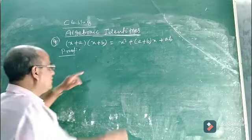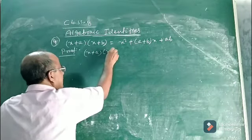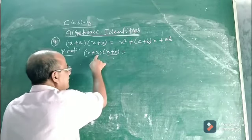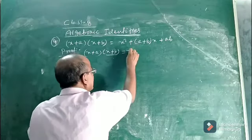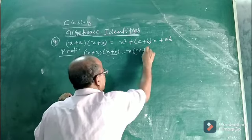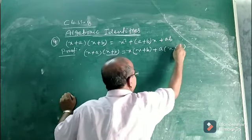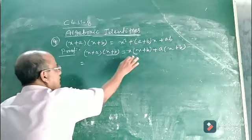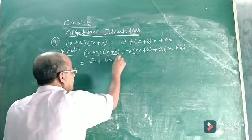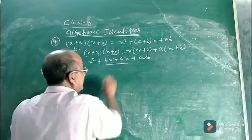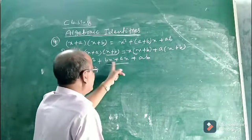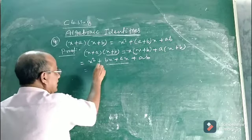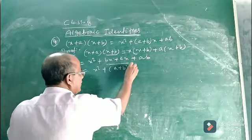Let us prove it — it is very simple. If you break x plus a into x plus b, then multiply the first term of the first binomial by the second binomial, and the second term of the first binomial by the second binomial: x into x plus b, plus a into x plus b. This gives x square plus bx plus ax plus ab. Taking x common from the middle terms gives x square plus a plus b into x plus ab.